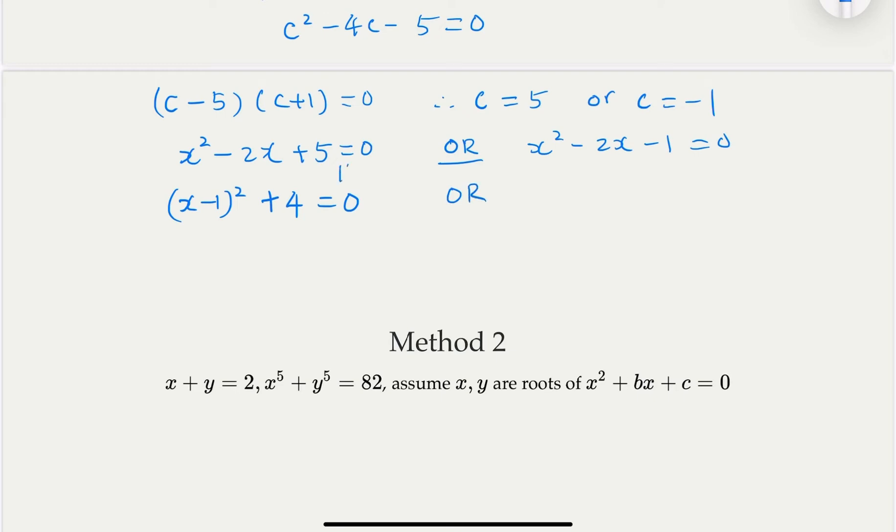Or in this case, so if that is the case, it's (x minus 1) squared, and then you need to minus 1, and then minus 2 equal to 0.